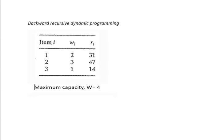There are three elements of the model. The first one will be the stage. Stage refers to the item, so in this problem we have three items, which means we have three stages.